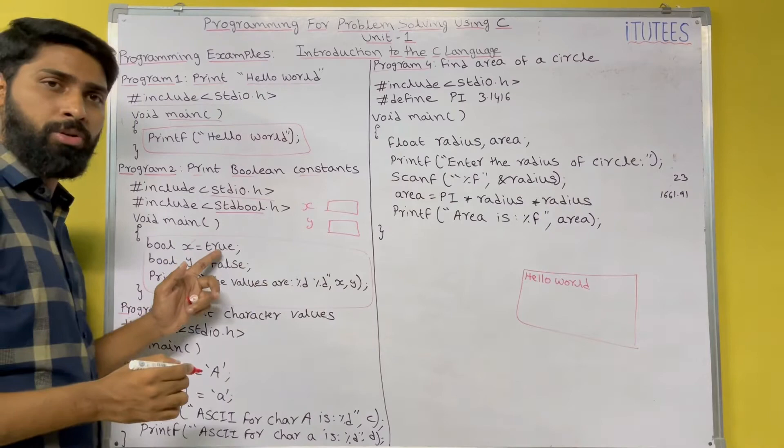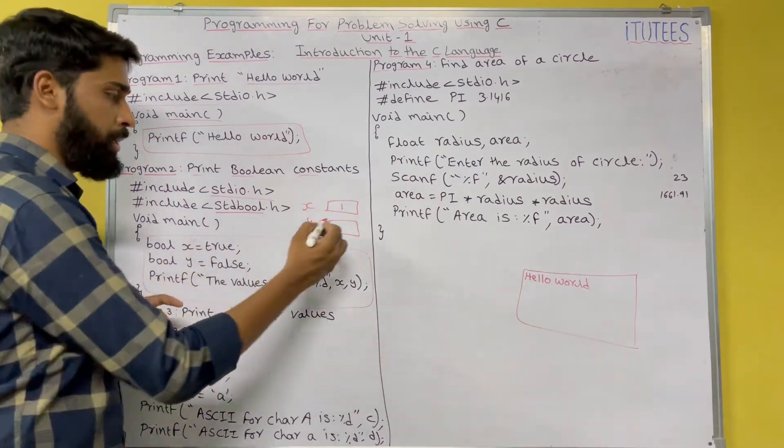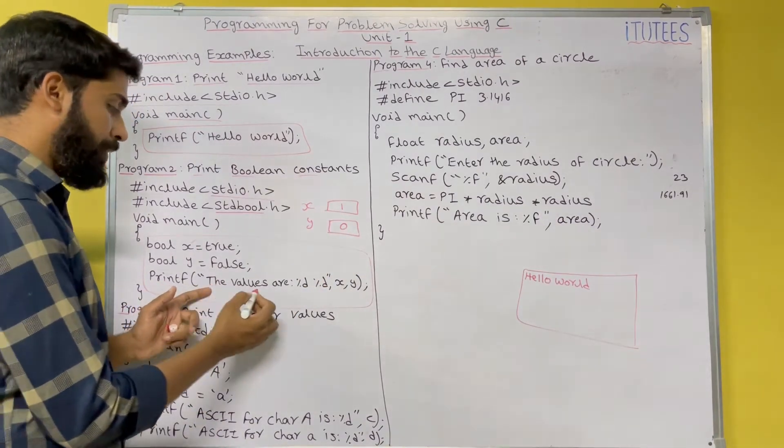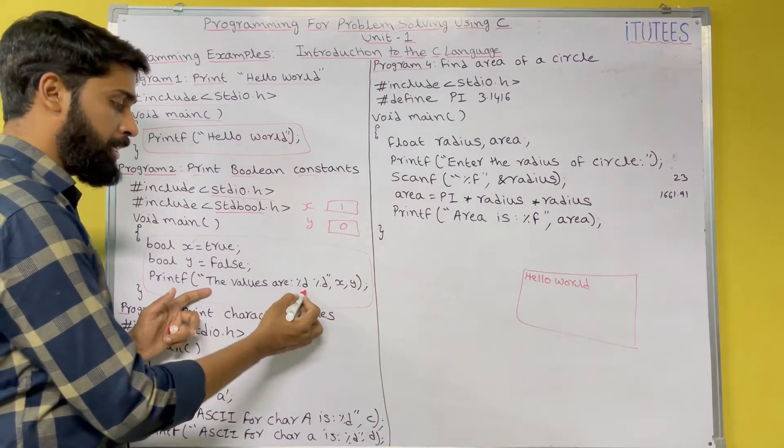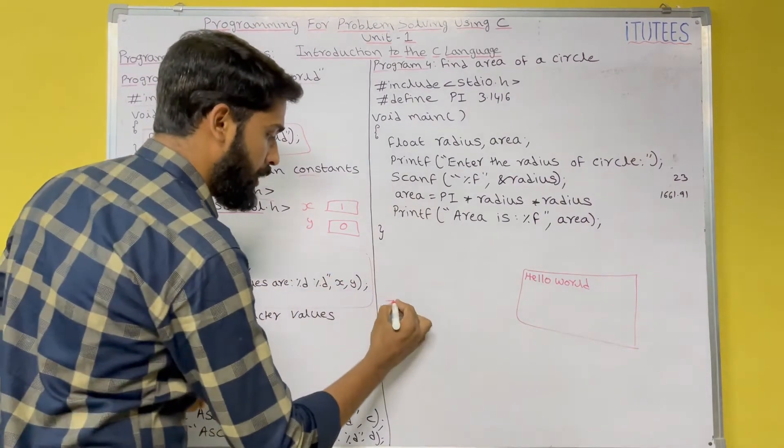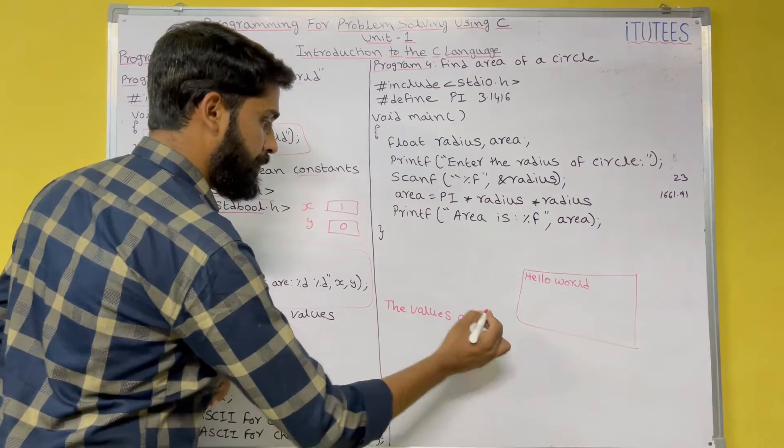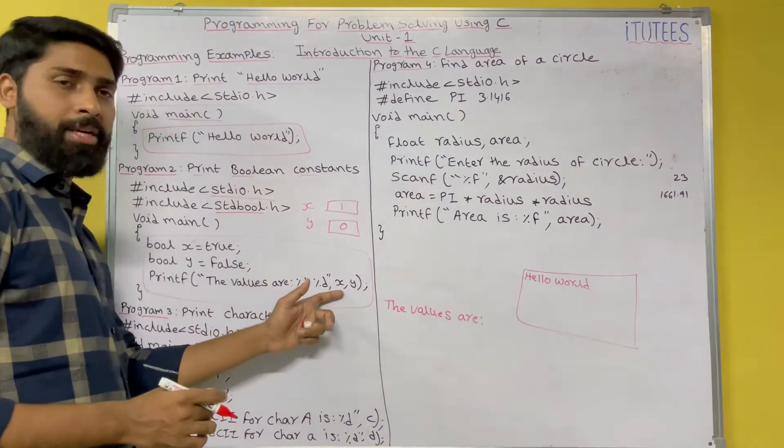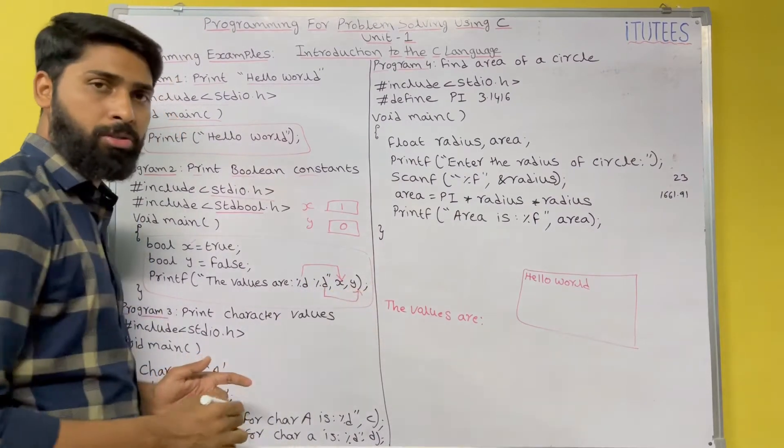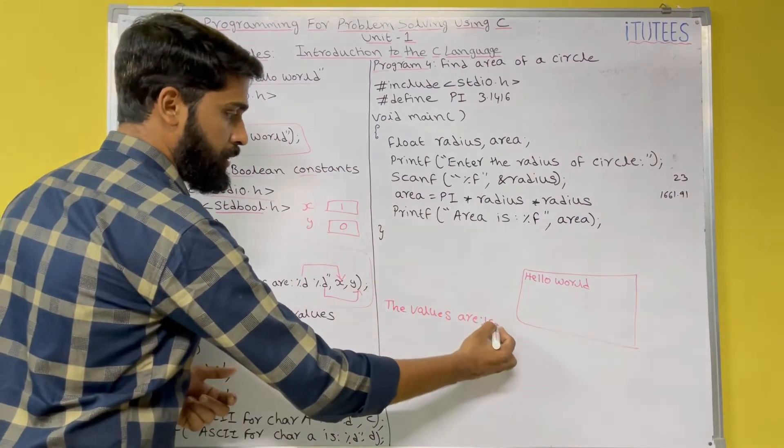X equals to true. True is nothing but 1. Y equals to false. That is 0. Now, you are going to print these values. The values are %d, %d, x, y. On the monitor, it prints the values are. After %d, x. This %d belongs to x. Second control string belongs to second variable. %d means it displays 1, 0.